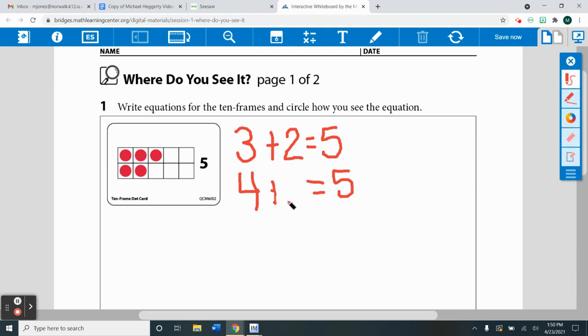So, four plus one equals five. And I see that right here. Four plus one equals five.